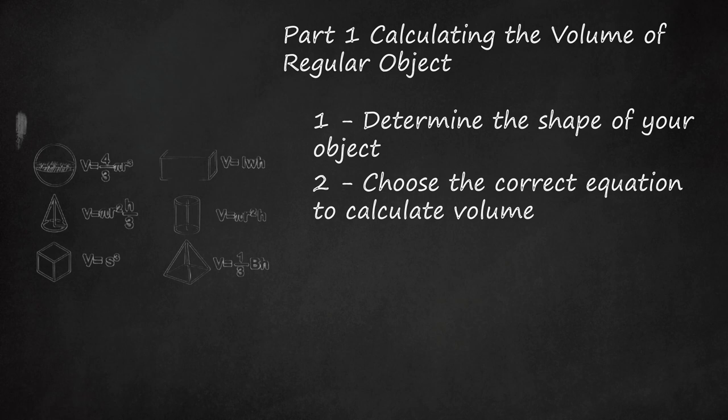Cylinder: V = πr²h, where r is the radius of the circular base and h is the height of the cone.